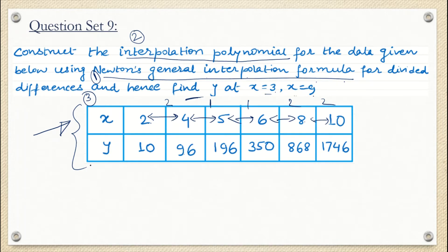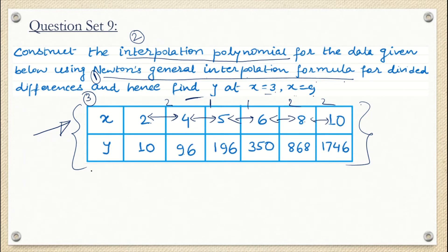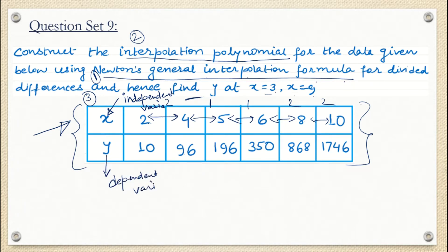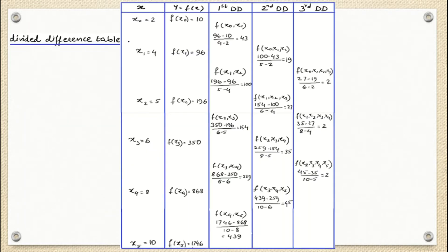Sometimes the question is not given in tabular form — they write down some values of independent variables and corresponding dependent variables and ask you to find the value at given points. You should know that x is the independent variable and y is the dependent variable — y depends on x, so y is a function of x. Here is the Newton's general interpolation table, also called the divided difference table. Initially you have just two columns: X and f(x).